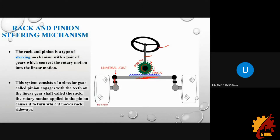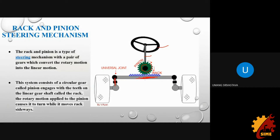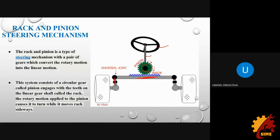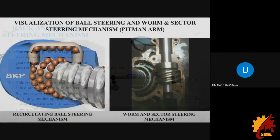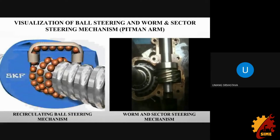The system consists of a circular gear called the pinion that engages with the teeth of a linear gear shaft called the rack. The rotary motion applied to the pinion causes it to rotate, moving the rack sideways — left and right — which in turn steers the wheels. This is the rack and pinion mechanism. The second mechanism is the Pitman arm.